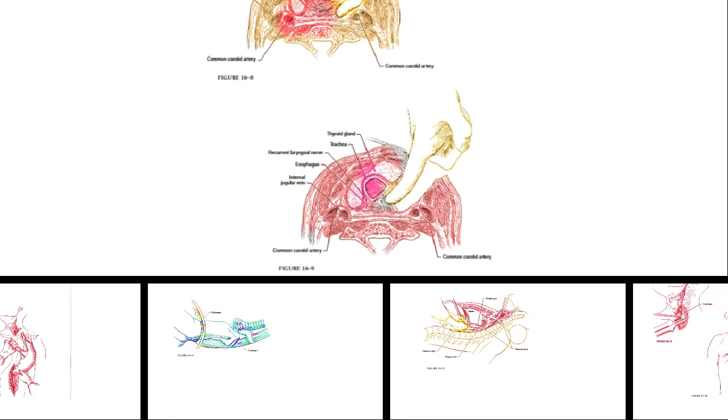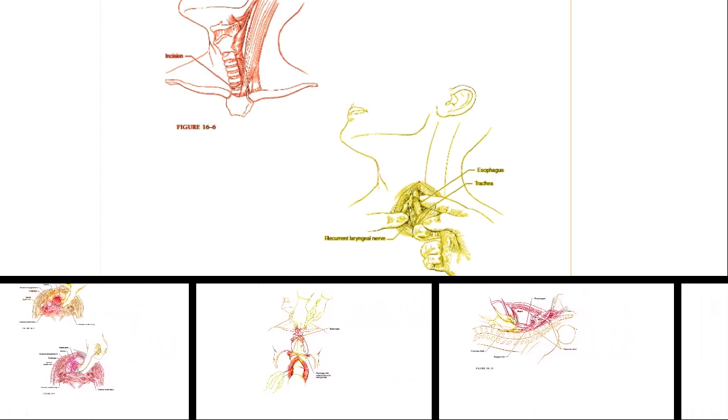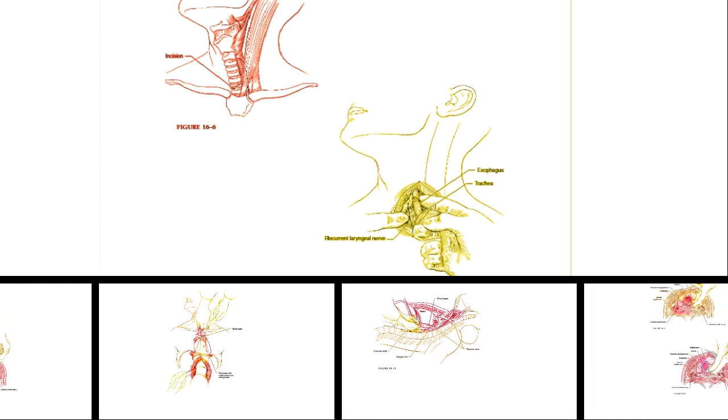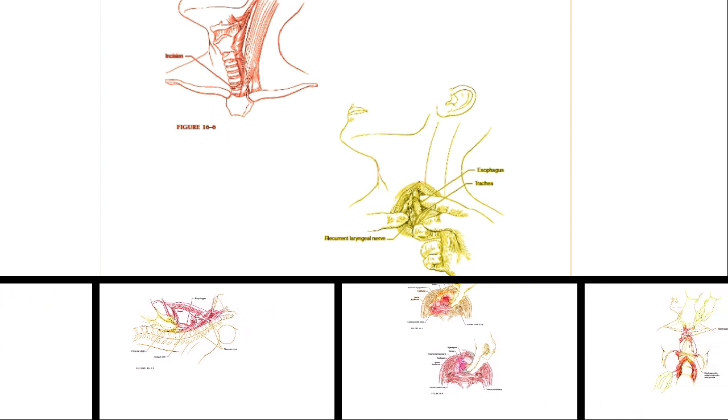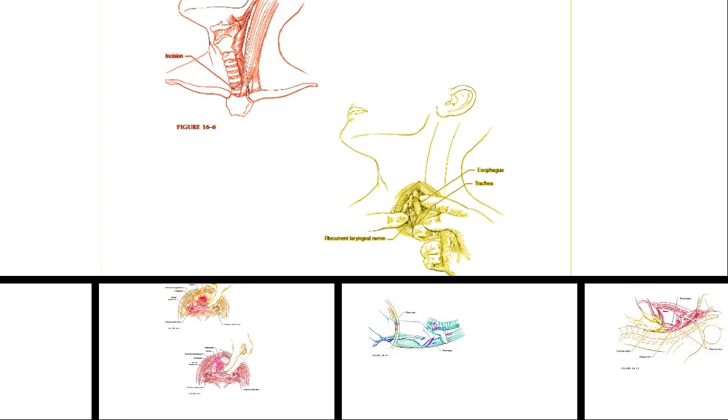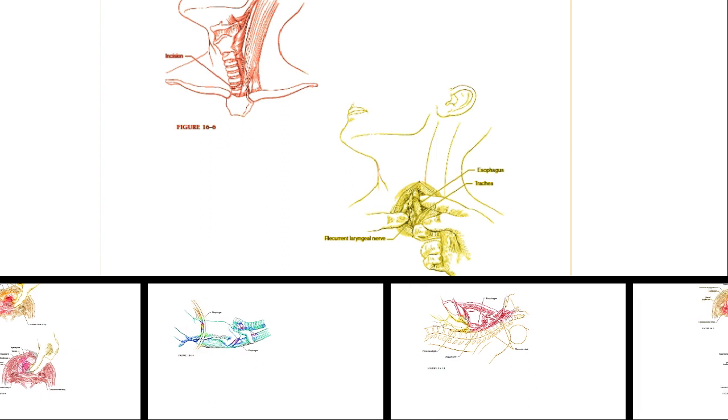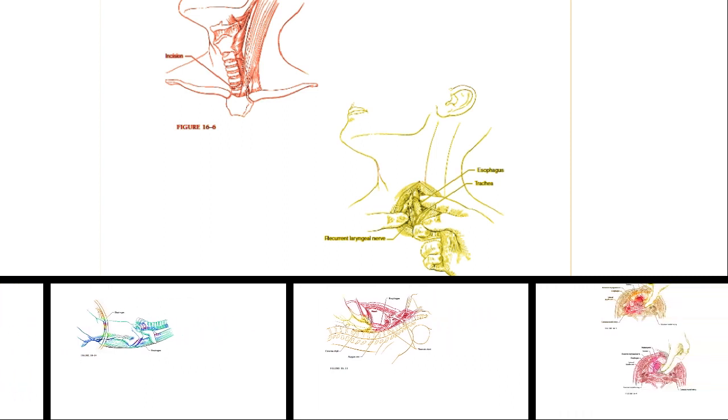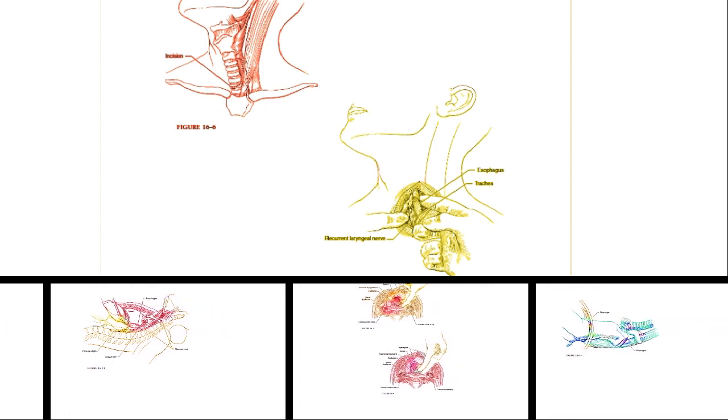Identify and preserve the right gastroepiploic and right gastric arteries during mobilization of the stomach. Vagal fibers around the mid-esophagus can be difficult to dissect bluntly. Using the vertebral bodies posteriorly as an anvil against which to compress tissues can facilitate blunt dissection. Communicate with the anesthesiologist, especially during transhiatal dissection when periods of hypertension are common. Keep dissection close to the proximal esophagus to minimize potential injury to the recurrent laryngeal nerves.